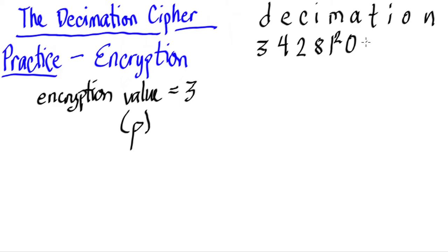a is 0, t is equal to 19, i is equal to 8, o is equal to 14, and n is equal to 13. So there. So that's the first step.